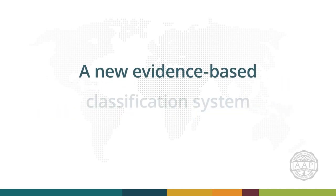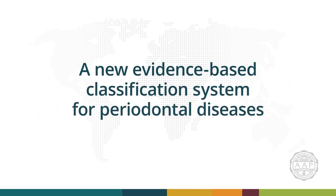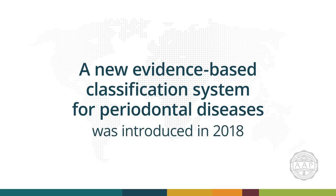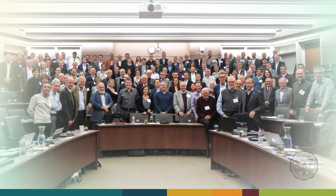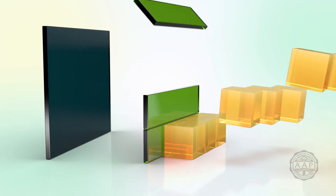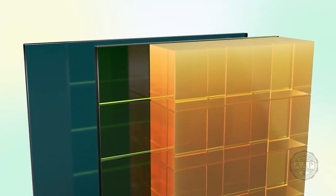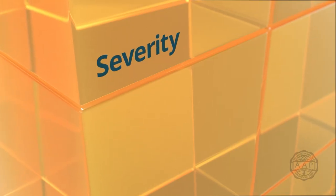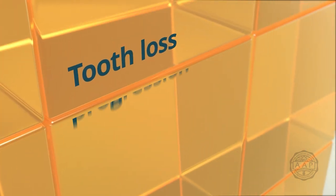A new evidence-based classification system for periodontal diseases was introduced in 2018 following a consensus conference of global leaders in periodontology. This new disease classification framework introduces a multidimensional staging and grading system for periodontitis, similar to what is used in medicine. This system considers severity, treatment complexity, tooth loss due to periodontitis, rate of disease progression, and risk factors.